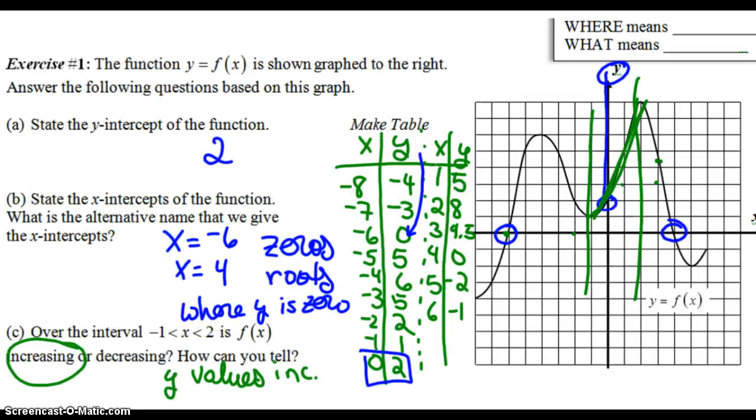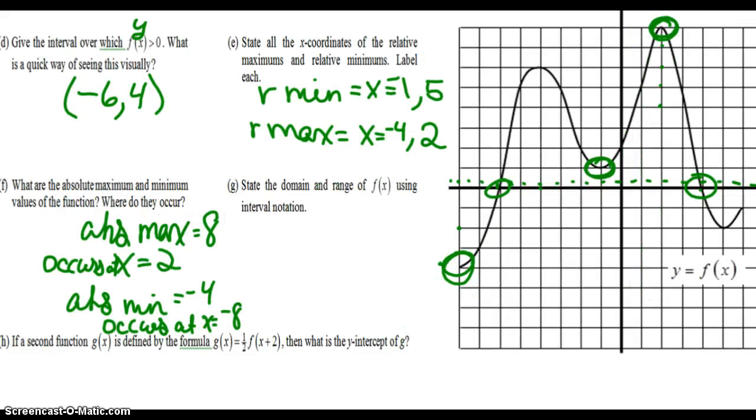So we're going to go back. When it says where does something occur, that's the x value. What is that? That's the y value. So you want to make sure you write those in there.